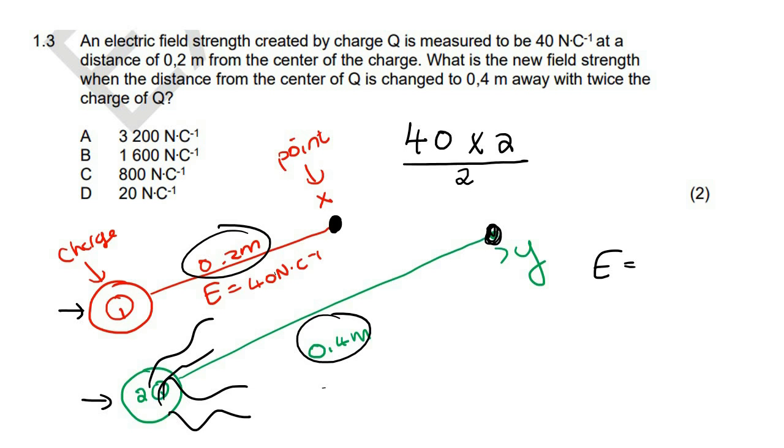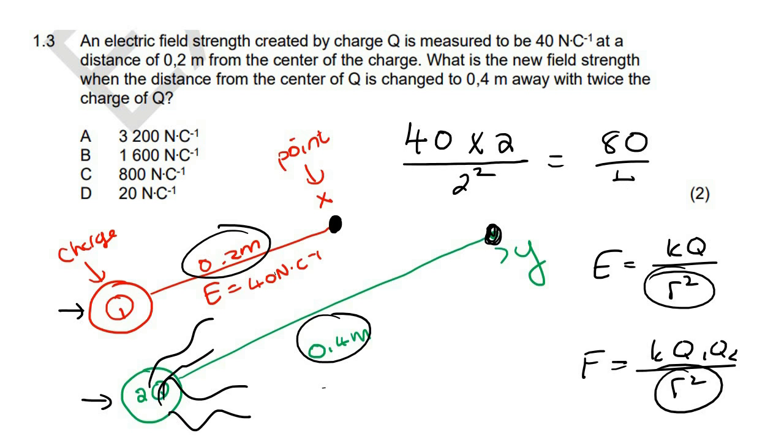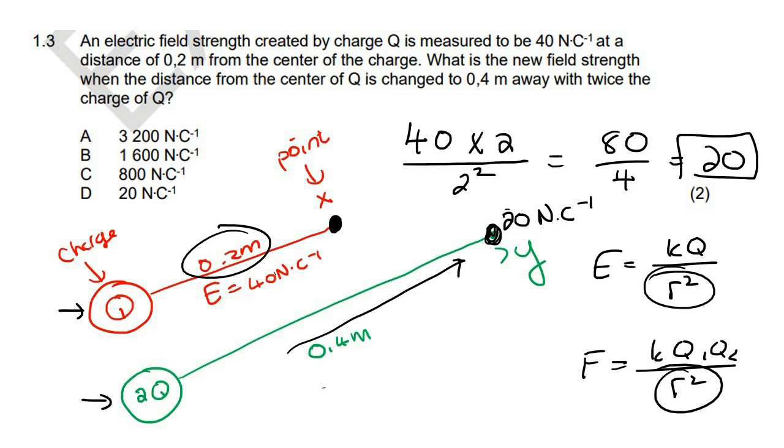So you might think that we have to go like this, divided by 2. But if we look at the formula, we know that the distance always has a square. So whatever we do to the distance, square that. And so if we work out 80 divided by 4, that would be 20. So the electric field over here is only going to be 20 newton coulombs. Yes, it would have become larger because now this has become stronger. But we also moved further away. And the more you move away, the lower the electric field effect becomes. So the answer here would be D.